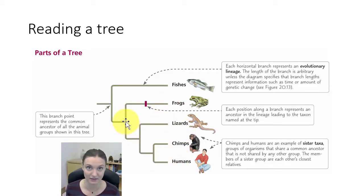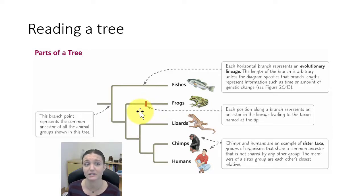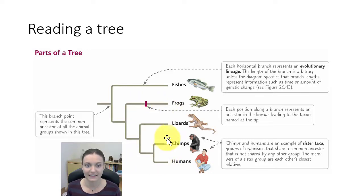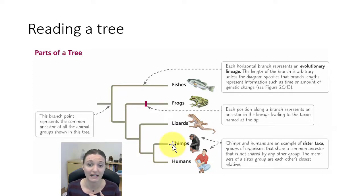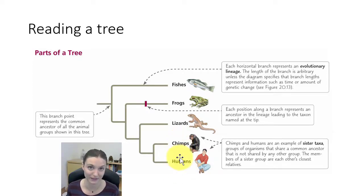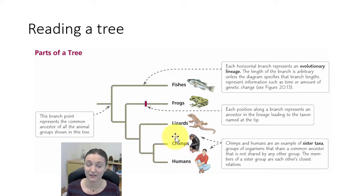Unless the tree is scaled to time, branch length is arbitrary. We will sometimes mark characteristics on the tree — a dash like this represents a characteristic that was gained or lost by one specific lineage. We also call lineages that are most closely related — those that share a common ancestor not shared by any other organisms on the tree — sister taxa. For example, chimps and humans are sister taxa, meaning they are each other's closest relatives.